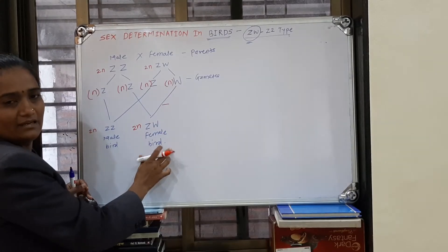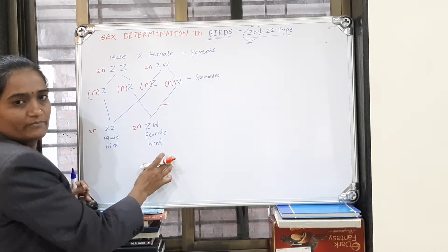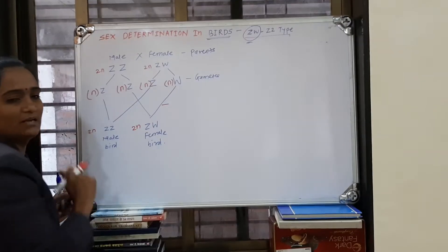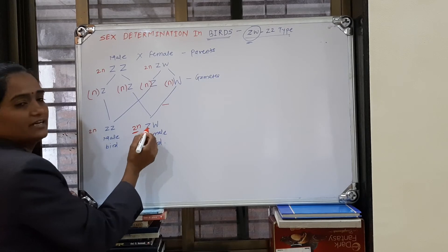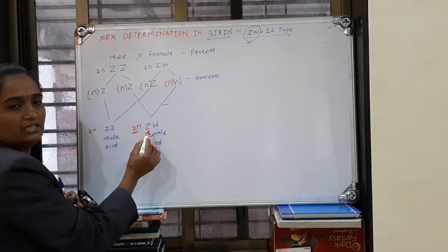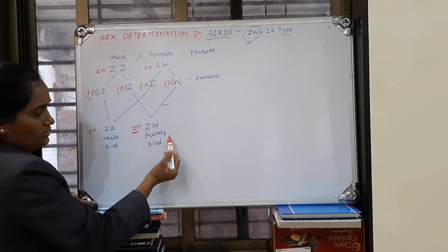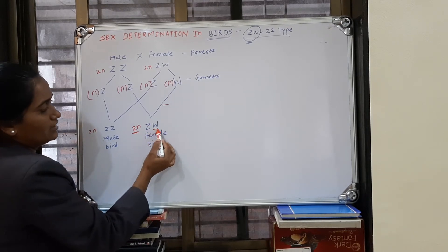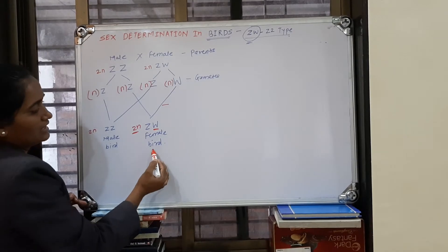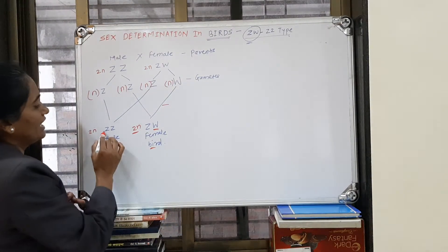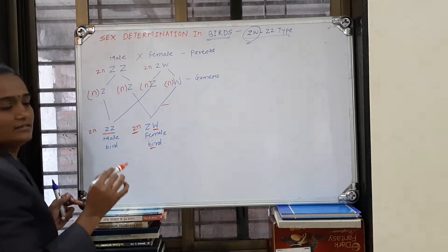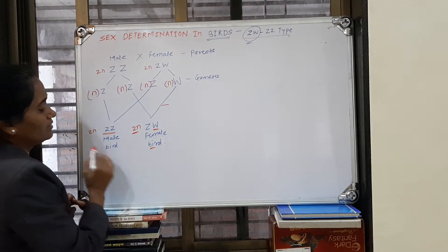The ZW combination produces a female bird. So if the offspring has ZW chromosomes, it is a female bird; if it has ZZ chromosomes, it is a male bird.